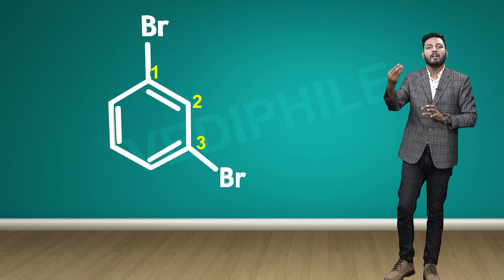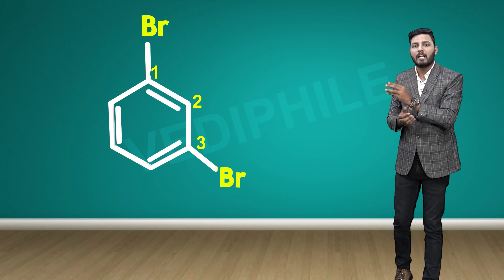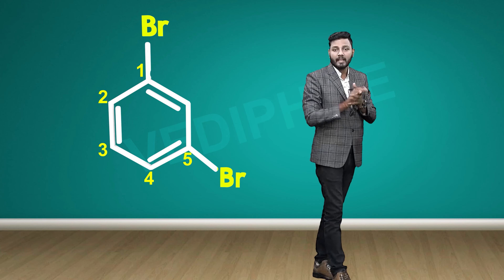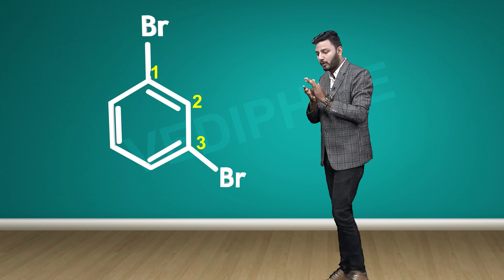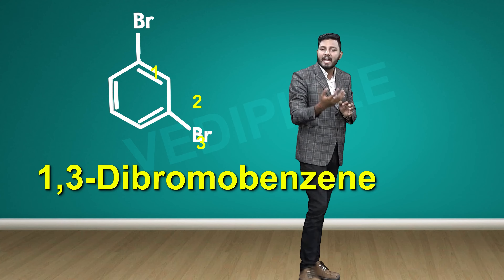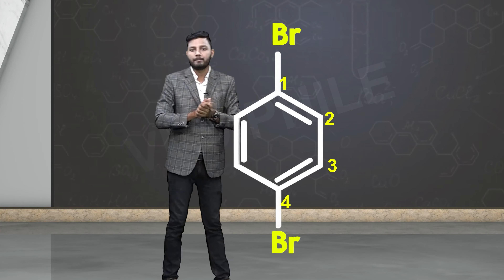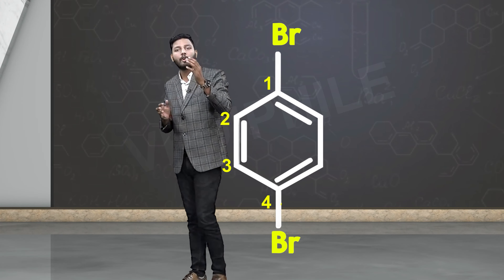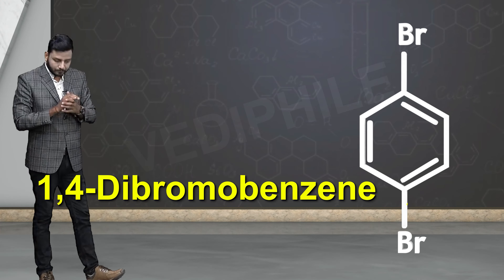In the next example, the same two bromines are present but at different positions — one and three. We could number from the other side giving one and five, but that is not correct because we must always give substituents the lowest possible numbers. So this compound is 1,3-dibromo benzene. Similarly, when the two bromines are at one and four positions — whether you number from the left or right the result is the same — the compound is 1,4-dibromo benzene.